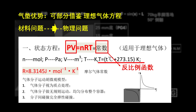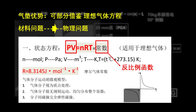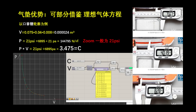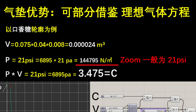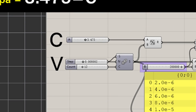气垫的一大优势是把缓震的材料问题变成了物理问题，对设计师来说是一种简化。可以借鉴理想气体方程：P×V = NRT，姑且认定NRT为常数（运动中温度不变），则P×V等于一个常数C，是反比例函数。以口香糖形状的Zoom气垫为例：长75mm、宽40mm、厚8mm，Zoom气垫气压约21 psi（即144,795 N/m²），计算得C = P×V ≈ 3.475。